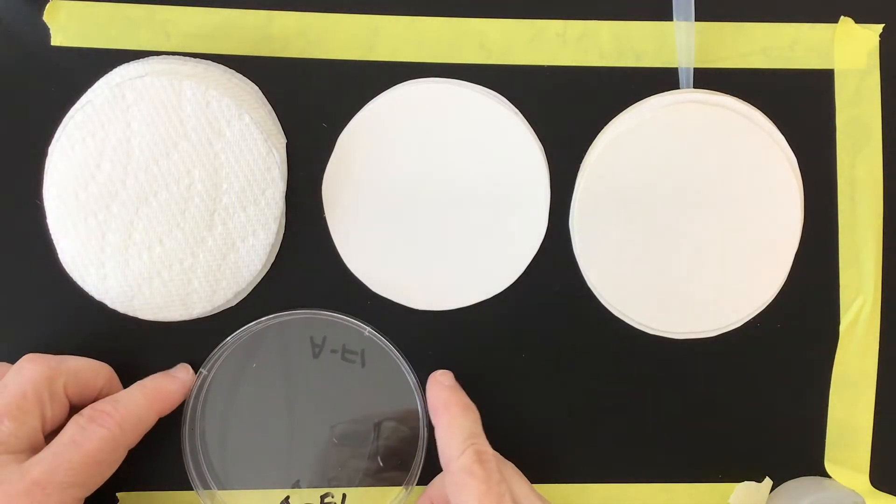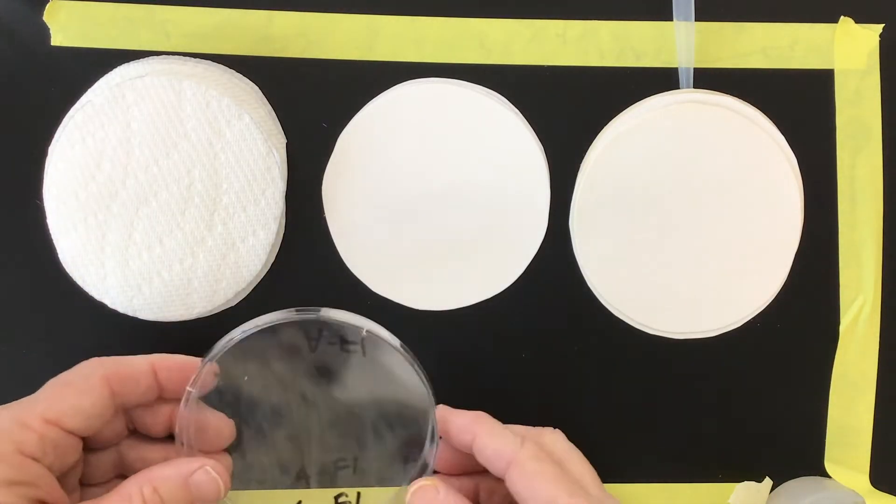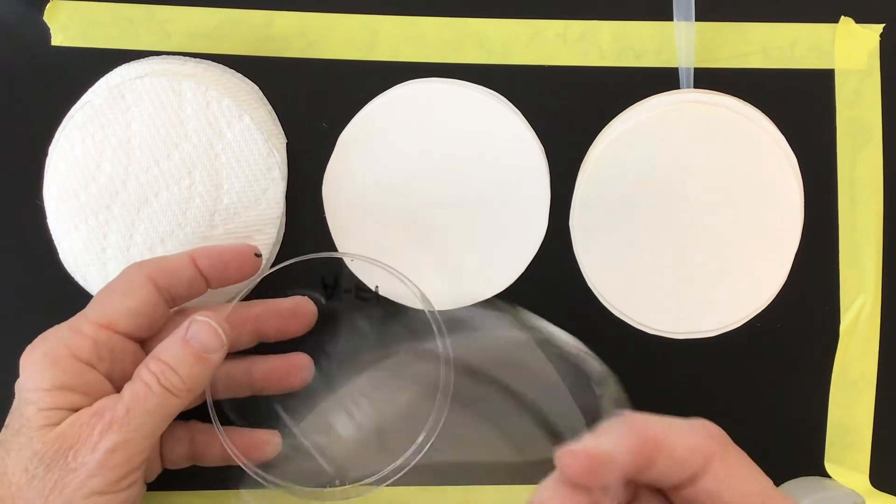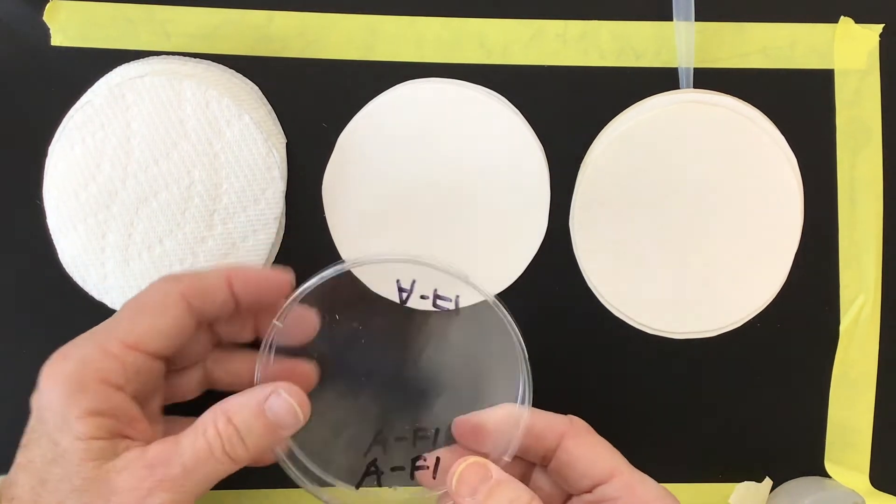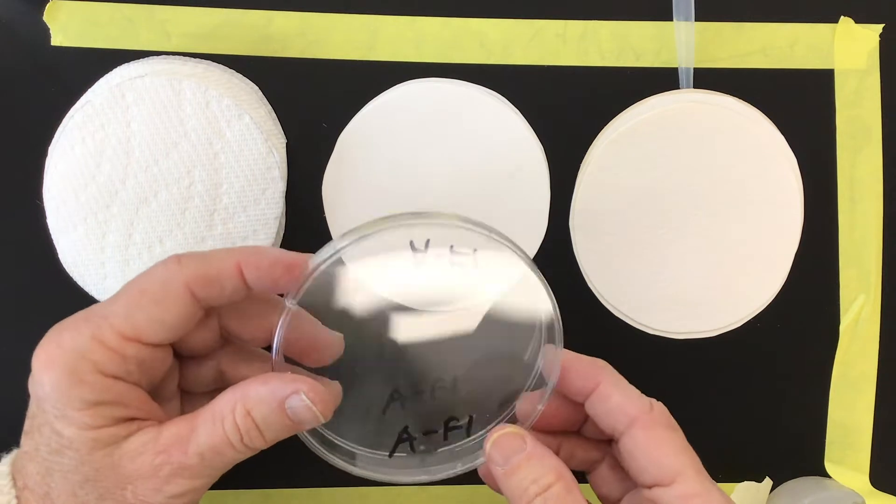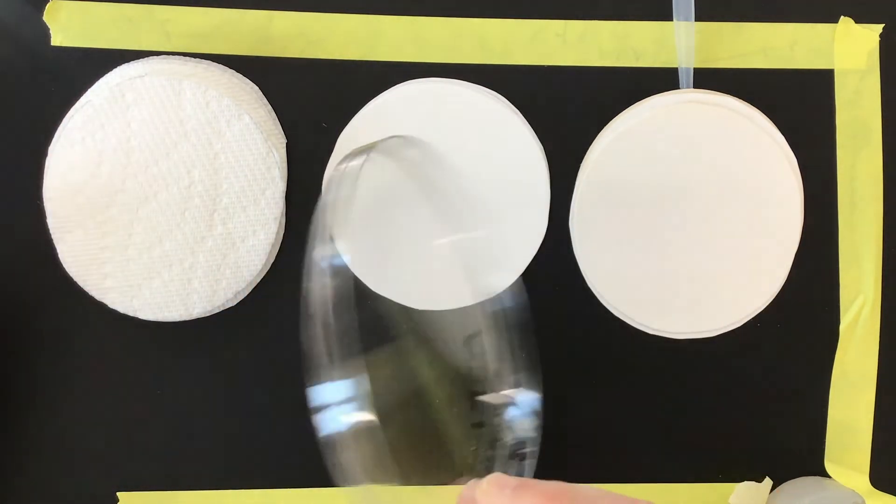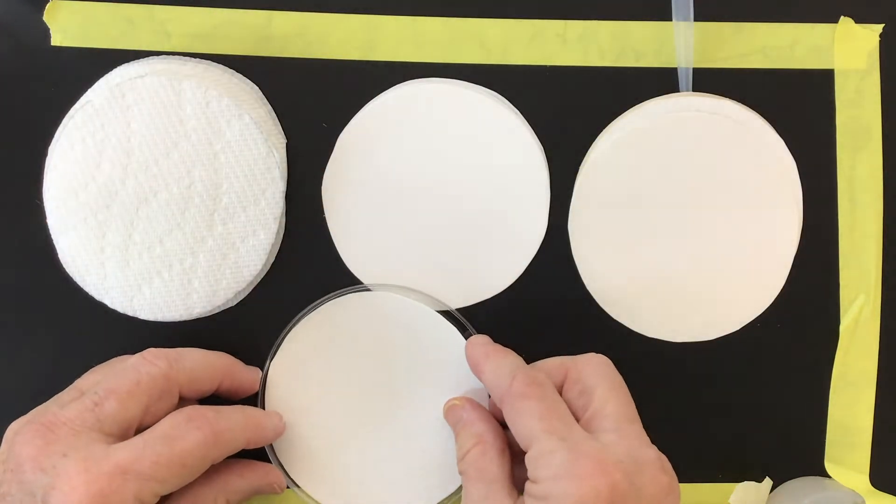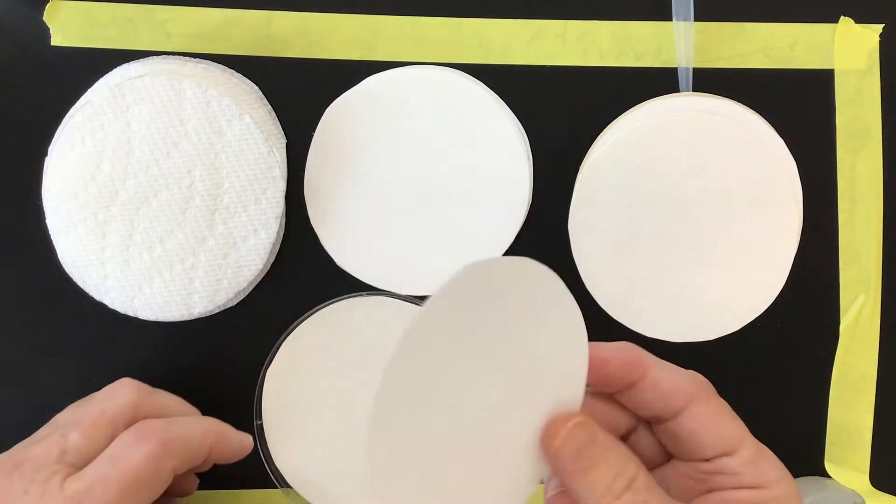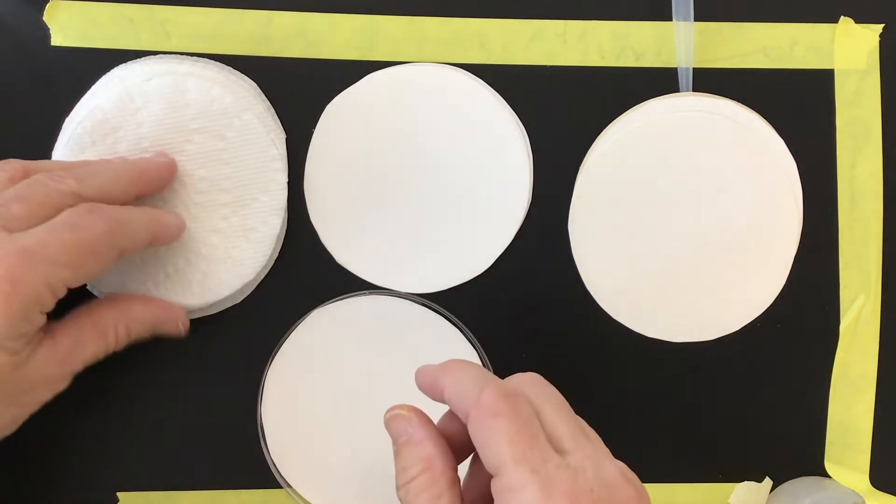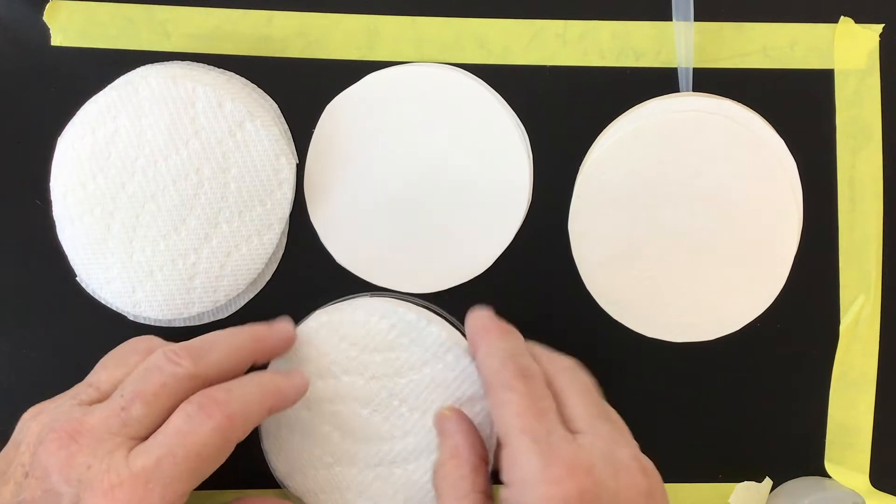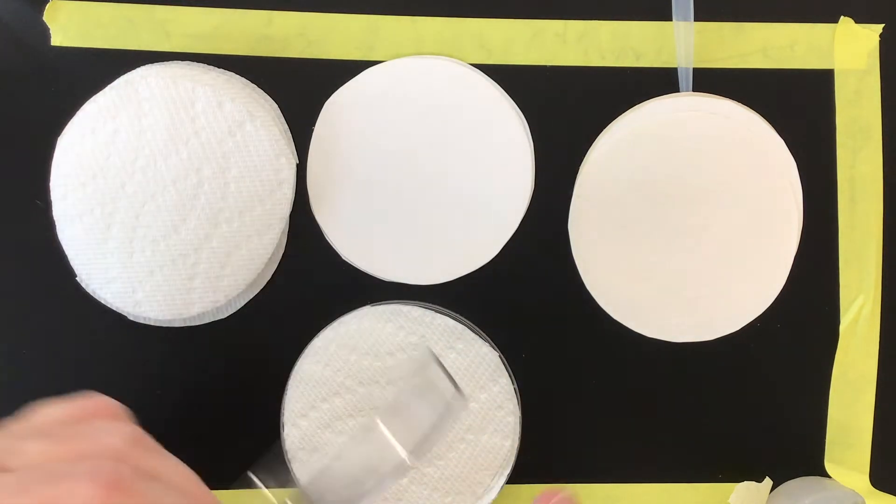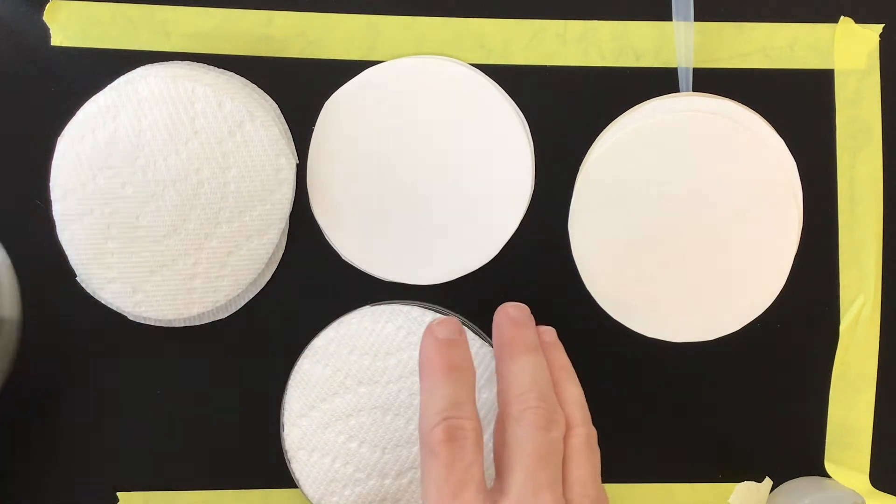The next thing we're going to do is we're going to put our filter papers into our petri dishes. The filter papers are going to go in the lid. The lid is the skinny one whose edges overhang the bottom piece. In that you're going to place one of the firm filter papers, one of the flimsy filter papers, and two of the paper towel. So do that for each of your petri dishes.